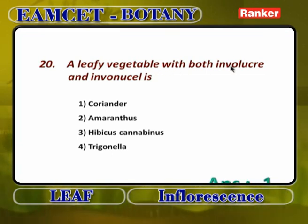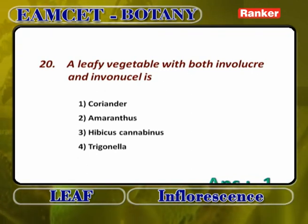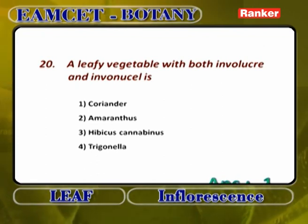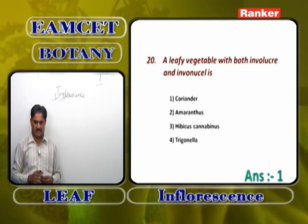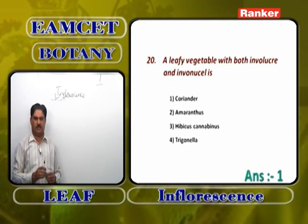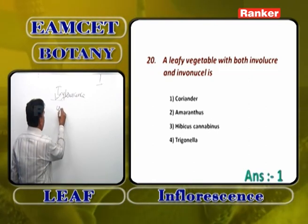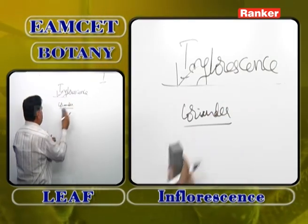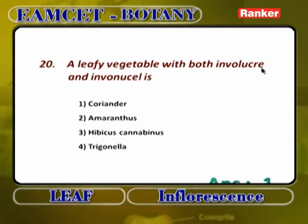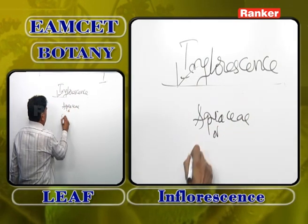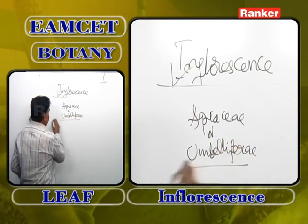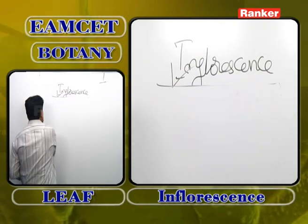A leafy vegetable with both involucre and involucell is coriander — that is compound umbel inflorescence. Compound umbel inflorescence is a special feature of Apiaceae or Umbelliferae. Amaranthus is a leafy vegetable but shows simple spike. Hibiscus cannabinus is a leafy vegetable but shows axillary solitary cyme. Trigonella foenum-graecum is a leafy vegetable showing simple raceme as it belongs to Fabaceae. So the answer is coriander.